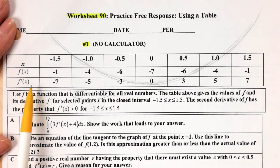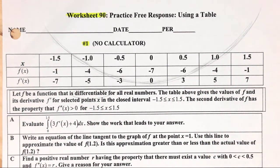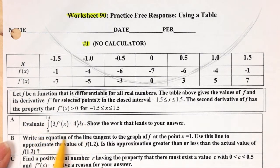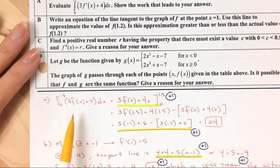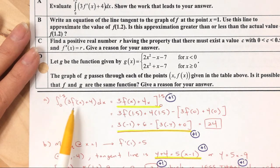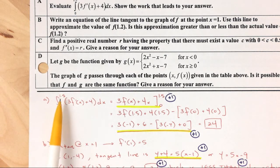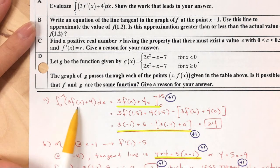I'll use that information later, but now you understand why I drew it this way. Starting with part A — evaluate the integral. The first thing I'm going to do is rewrite the integral from 0 to 1.5. It means take the antiderivative of 3f prime of x and 4. Since these are constants, I can take the antiderivative: the 3 stays and f prime of x becomes f of x.